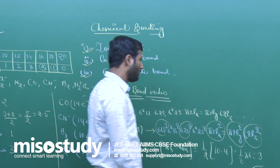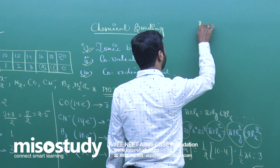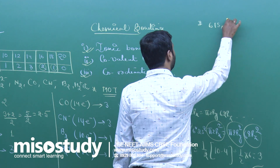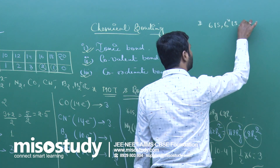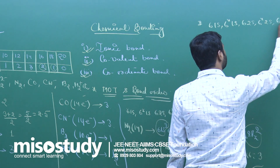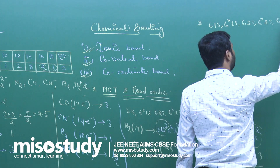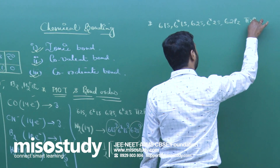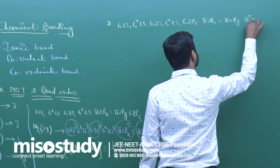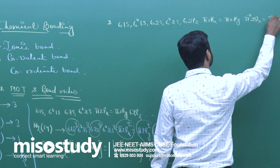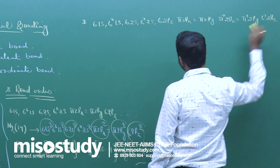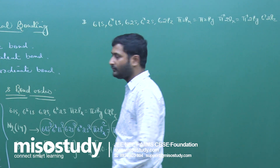For more than 14-electron systems, the electronic configuration order is different: σ1s, σ*1s, σ2s, σ*2s, σ2pz, then π2px, then π2py, π*2px, then π*2py, then σ*2pz, and so on.